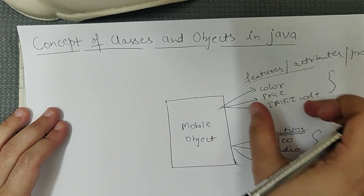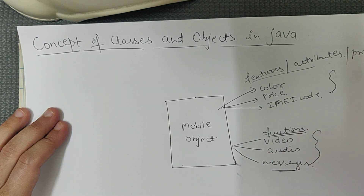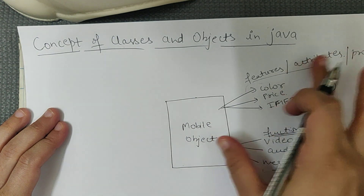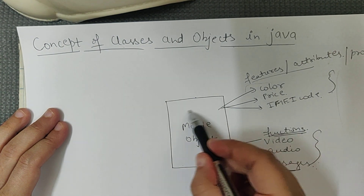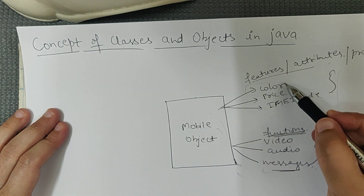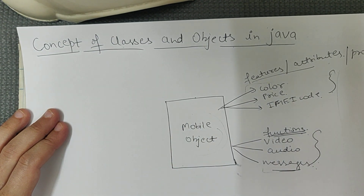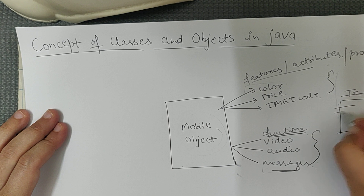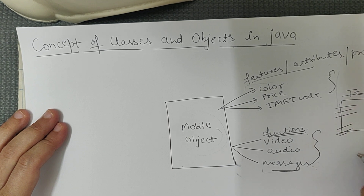These features and functions are written somewhere — in a template. This template holds all the features and functions. If the mobile object is to execute and implement its features and functions, they must be defined in this template. So this template is what we call a class.